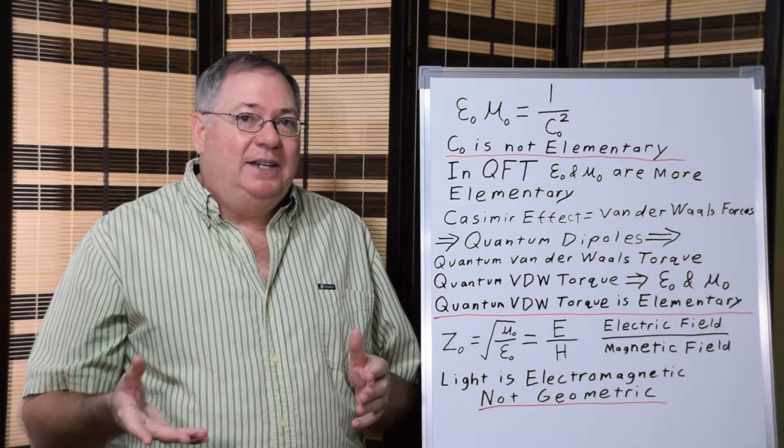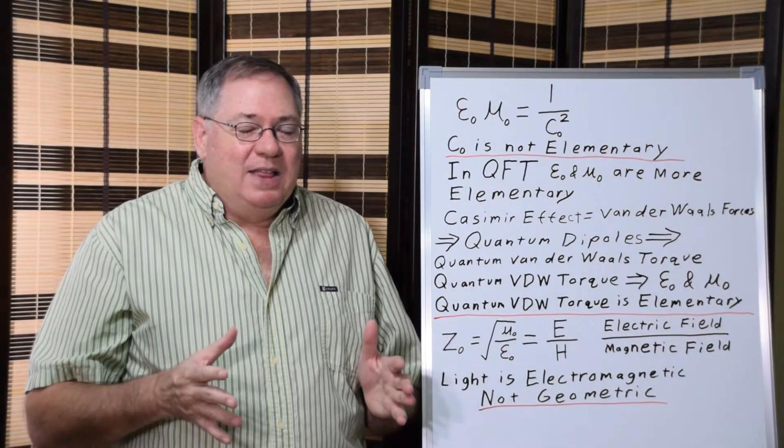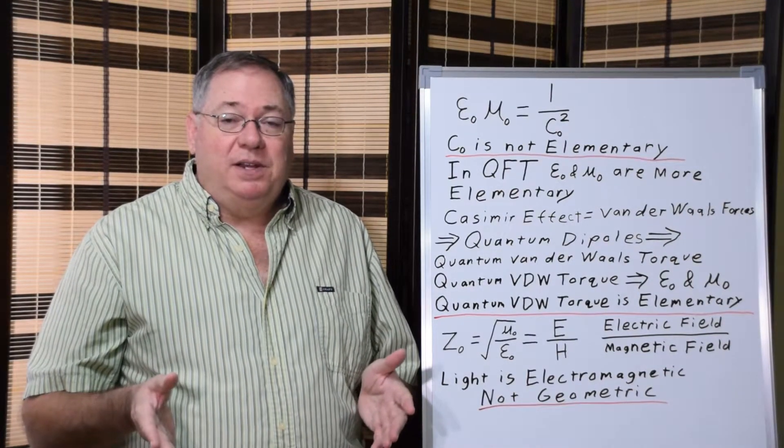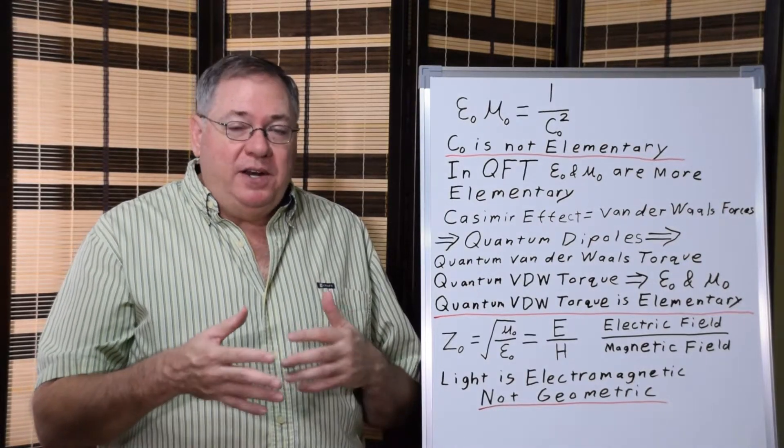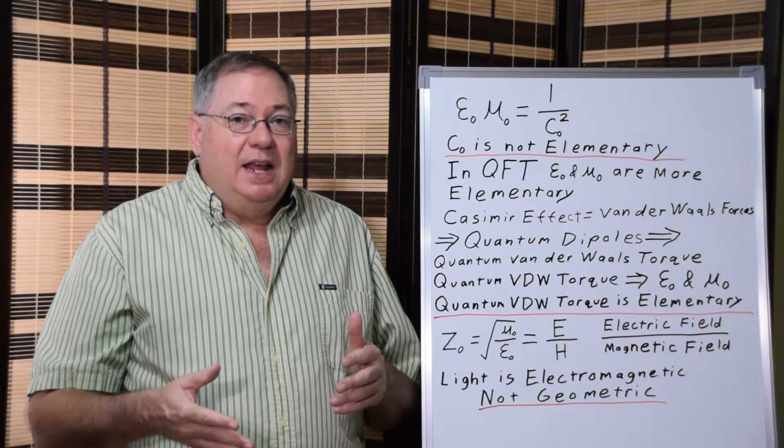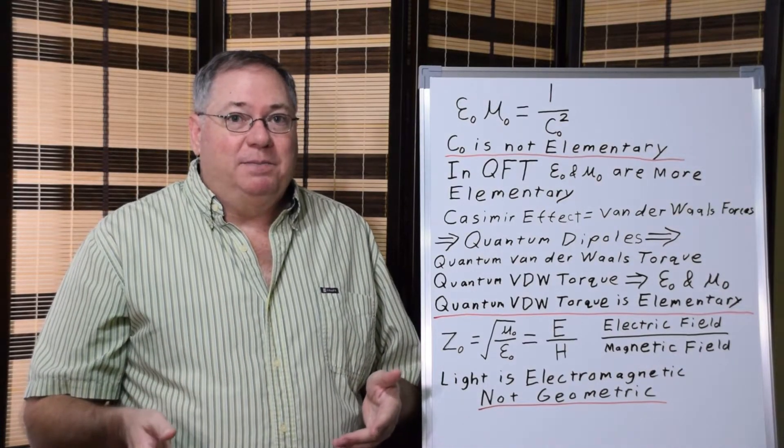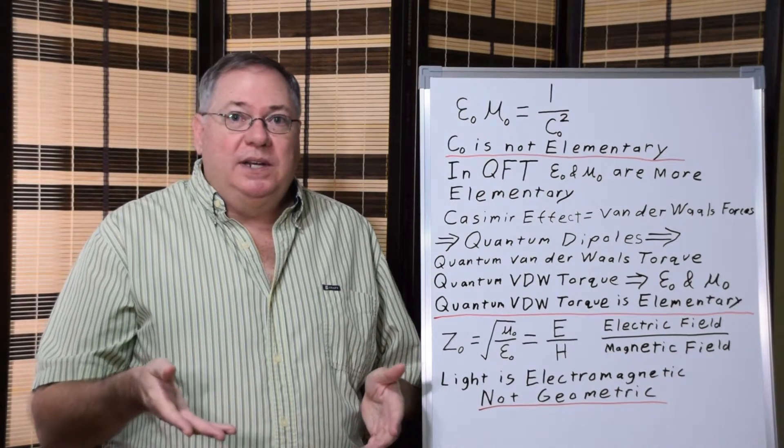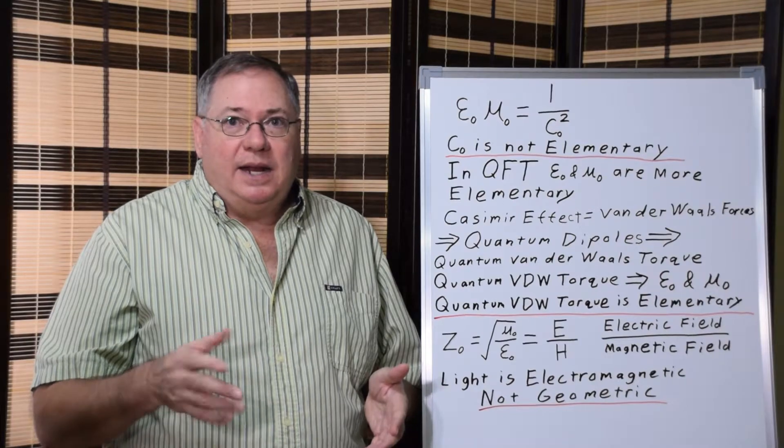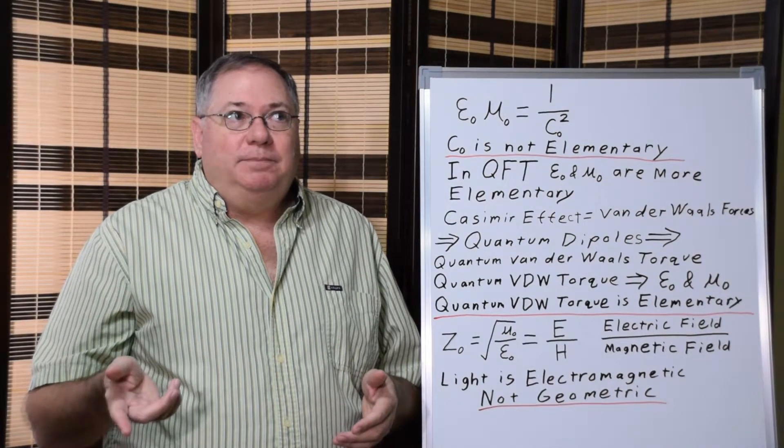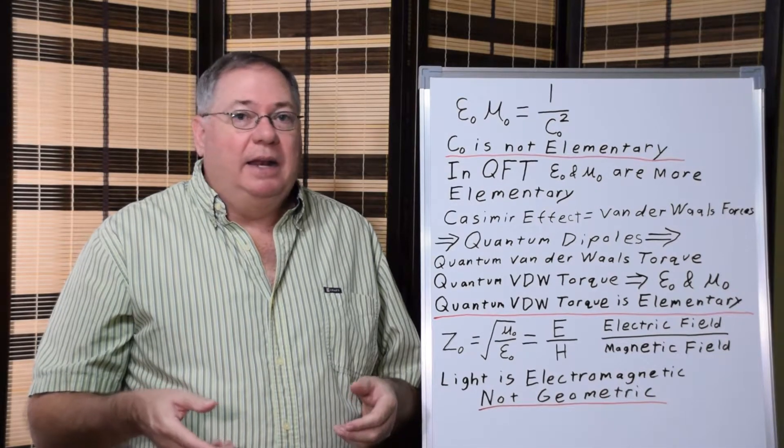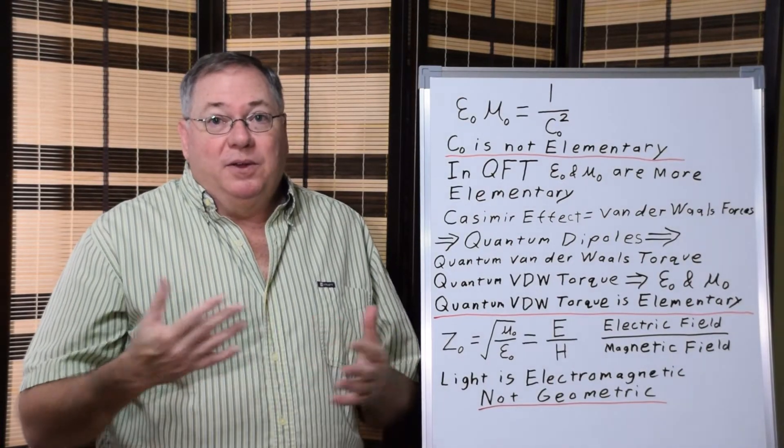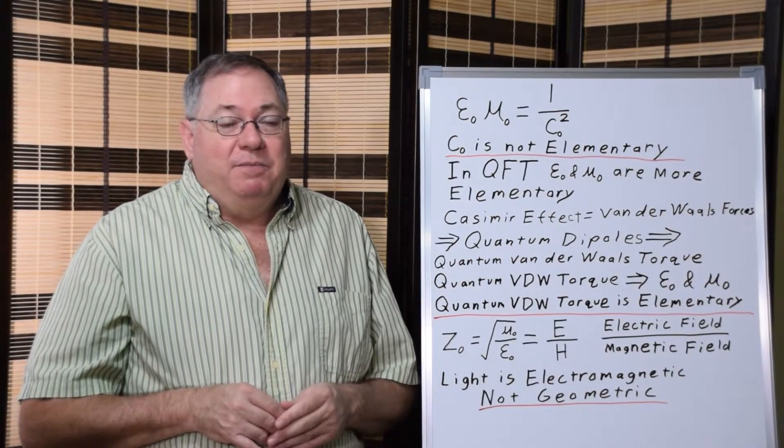Now, interestingly, Einstein realized this in the time frame from 1907 to 1911 because he published his first papers on general relativity where he considered the polarizability of space and considered that the speed of light was variable depending on the polarizability of space. Then afterward, other physicists followed up on that, Wilson in 1921 and then Robert Dickey in the 1950s, and then a number of physicists have been working on it in the meantime. And I'm one of those physicists now when I came to realize that according to quantum field theory, you have to start with the permittivity and permeability of space.